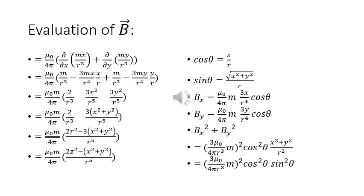Continuing, Bz equals μ₀/4π · [∂/∂x (mx/r³) + ∂/∂y (my/r³)]. Differentiation yields μ₀m/4π · [1/r³ − 3x²/r⁵ + 1/r³ − 3y²/r⁵], which equals μ₀m/4π · [2/r³ − 3x²/r⁵ − 3y²/r⁵], further simplifying to μ₀m/4π · (2r² − 3(x² + y²)) / r⁵.